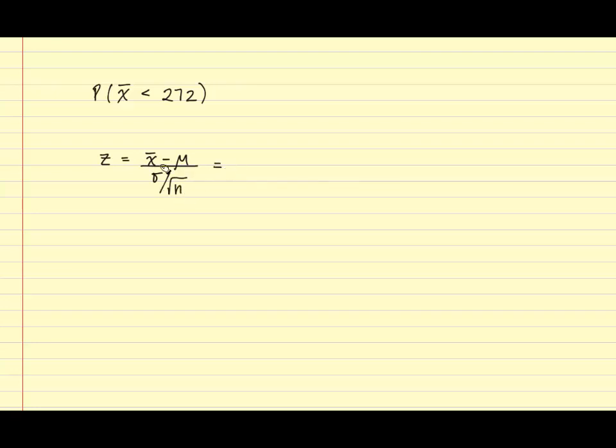For this example, X bar is 272. Mu comes from the problem and it stated that the mean gestation length was 266 days. Sigma was 16 and the sample size in this example was 64.